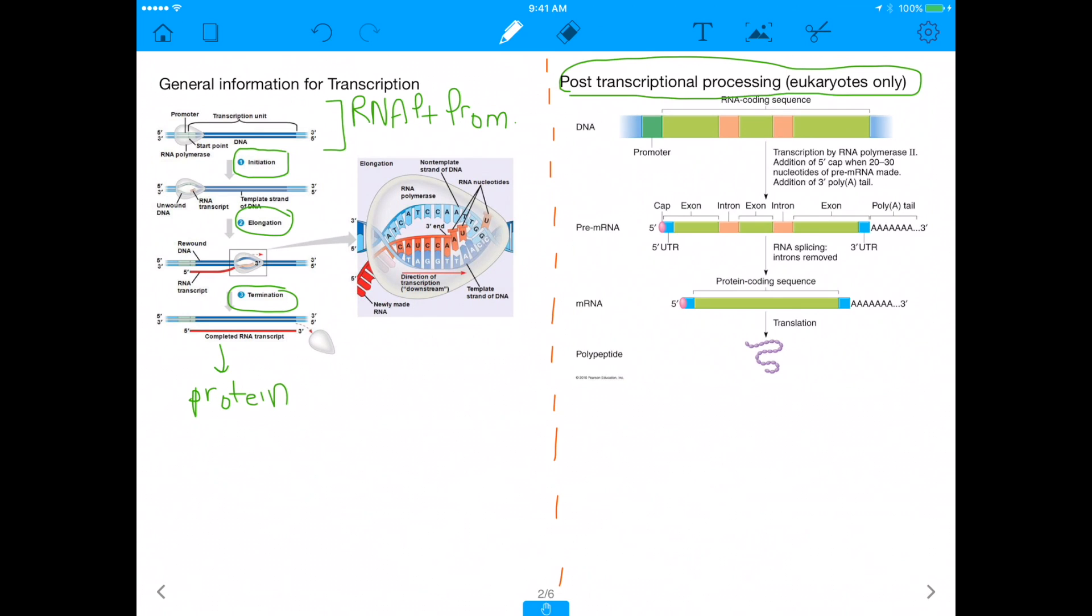Post-transcriptional processing happens in eukaryotes. So before we actually turn this RNA into protein, you'll see that the RNA will first go through this process of post-transcriptional processing. And what happens in the post-transcriptional processing? Well, the initial RNA transcript we have will obviously have a promoter. It'll have introns and exons in the eukaryote. And remember, those exons are going to be kept in, and the introns will be spliced out. So, in post-transcriptional processing, the introns spliced out.